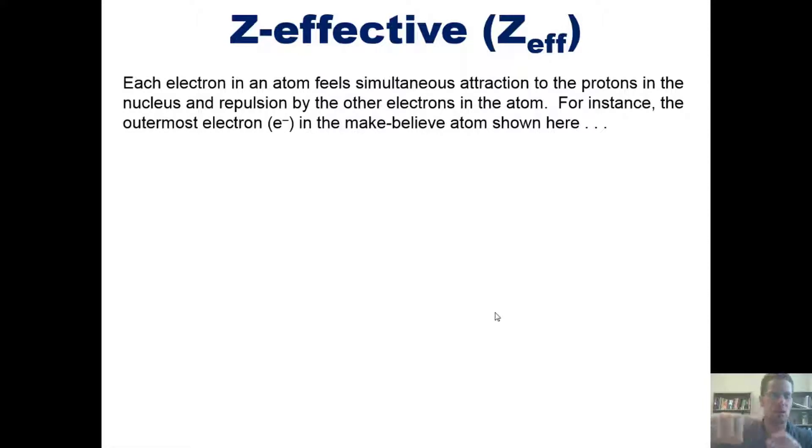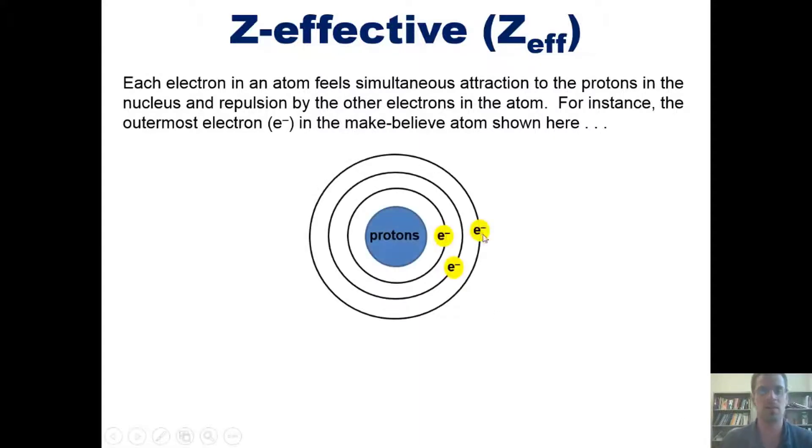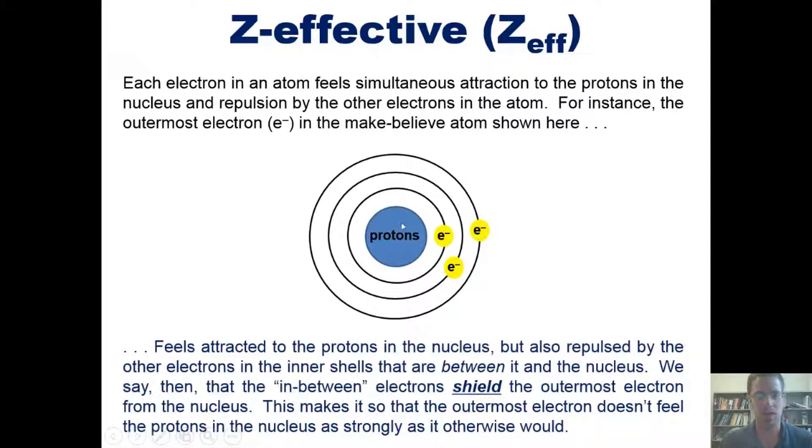With that said, it makes sense that every electron orbiting around the nucleus feels an attraction to the protons that are in the nucleus. But at the same time, they also feel some degree of repulsion from the other electrons that are around them and between them and the nucleus because electrons all have negative charges and negative charges repel each other.